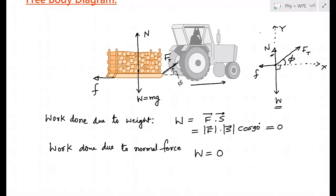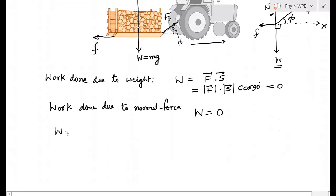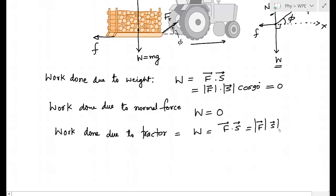Now we calculate work done by the tractor force FT. Work = F dot S = magnitude of FT times displacement times cos(phi) = 5000 Newton times 20 meters times cos(36.9 degrees). This works out to 80 kilojoules of positive work done by the tractor.